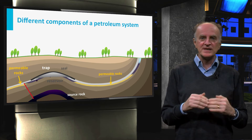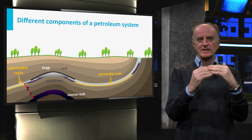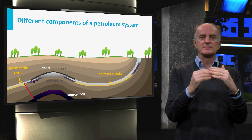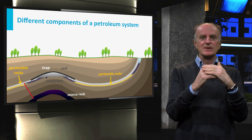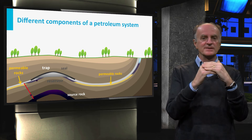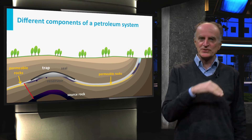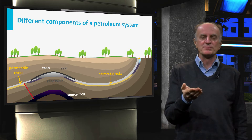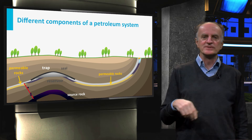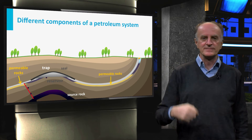If the migration is prevented by a seal, then hydrocarbons are trapped and will start to accumulate, filling the reservoirs. Hydrocarbons which are not trapped by an appropriate seal will continue their migration and seep at the surface.